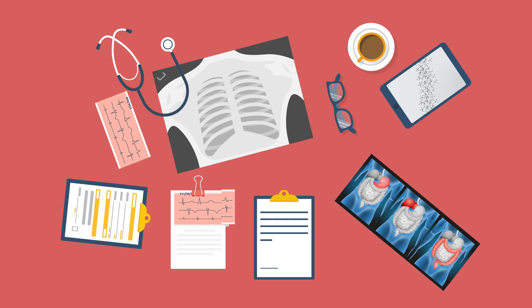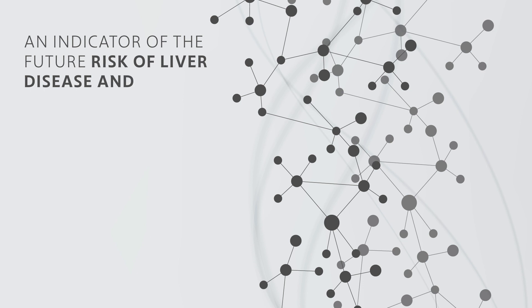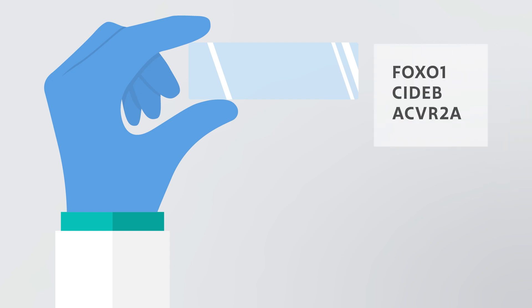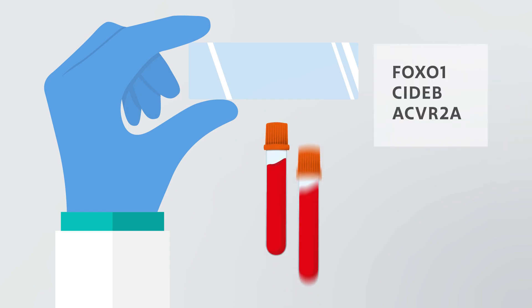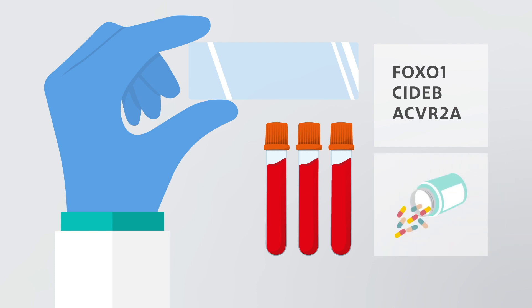Future clinical studies will explore whether these mutations and genome changes are an indicator of future risk of liver disease and cancer, and if they can be used as biomarkers for disease progression and prognosis. Another exciting possibility will be to design drugs that harness or mimic the effect of these mutations to prevent the progression of liver disease and the development of liver cancer.